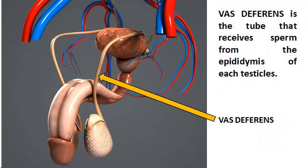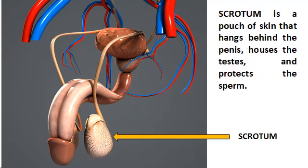The vas deferens is the tube that receives sperm from the epididymis of the testicle. The scrotum is a pouch of skin that hangs beyond the penis, houses the testes, and protects the sperm by keeping the temperature of the testes slightly lower than the normal body temperature in order for the sperm to survive.